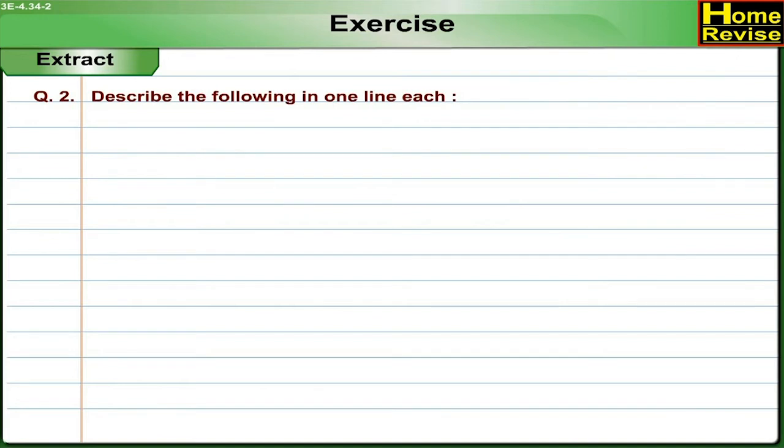Question 2. Describe the following in one line each. 1. An ocean: An ocean is a very big sea.